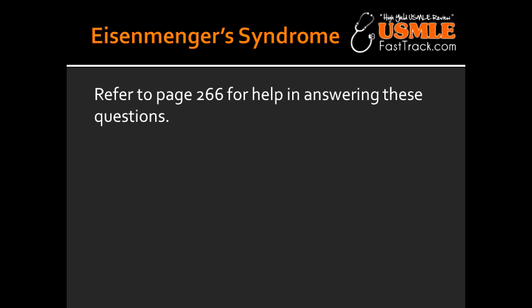What are some of the symptoms of Eisenmenger's Syndrome? Some of the symptoms include clubbing and polycythemia. Polycythemia is a condition where there is an abnormally increased concentration of hemoglobin or red blood cells in the blood.